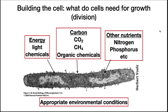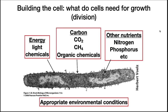Here are the learning outcomes for nutrition. Microorganisms need many things to be able to grow. For this lecture, we are going to break them down into four categories. They need energy to power the synthesis of macromolecules, which come from light or chemicals. They need carbon to build these macromolecules. Microbes will obtain this carbon either from organic sources, methane, or carbon dioxide. There are also a whole host of other nutrients needed by living things, including nitrogen and phosphorus. Finally, a cell needs appropriate environmental conditions.